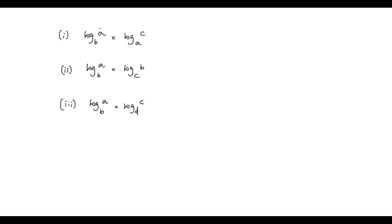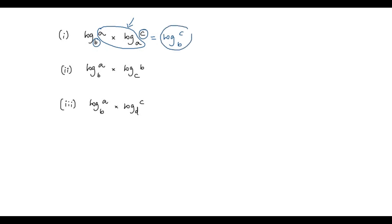We have to mark the part which covers the argument of the first logarithm and the second logarithm along with its base. Now we have to remove this part and write the logarithm with argument C and base B. So, log C to the base B.